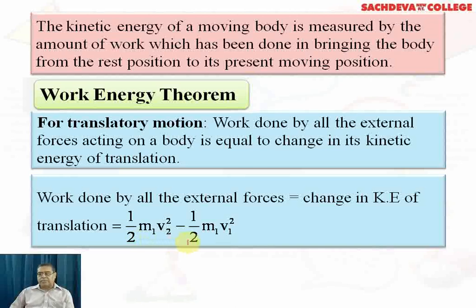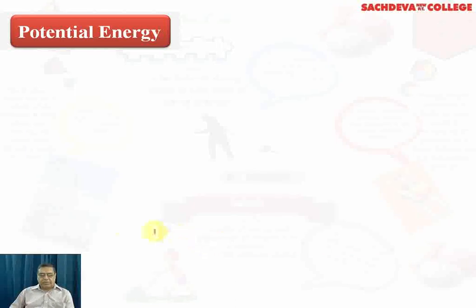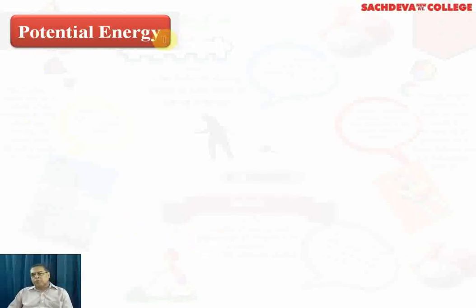Now we come to potential energy — the energy due to the position or condition of a body. It is calculated by the formula mgh, where mg is the weight (force) and h is the height at which the body is kept.